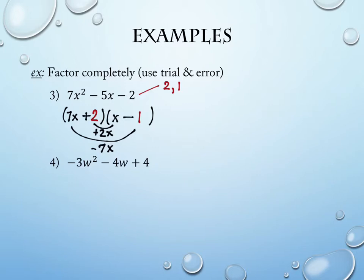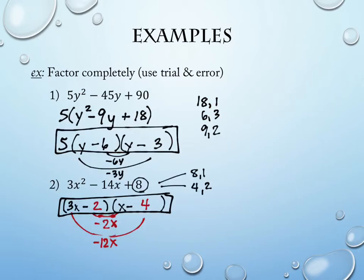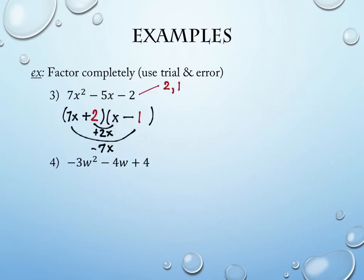We happened upon the right answer a lot quicker than the last one. What makes problem 4 different? A is negative — it starts with a negative in front of the squared term. When that happens, we don't want to start factoring right away. Much like the first problem where we factored something out, we want to factor out the negative. We do not want A at the beginning to be negative and then proceed with factoring. It makes it unnecessarily more difficult.